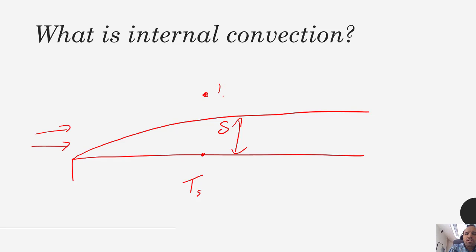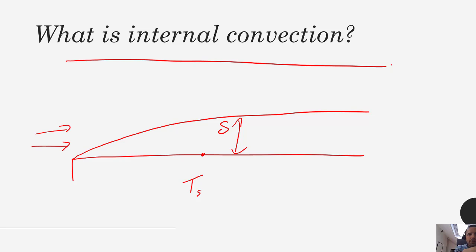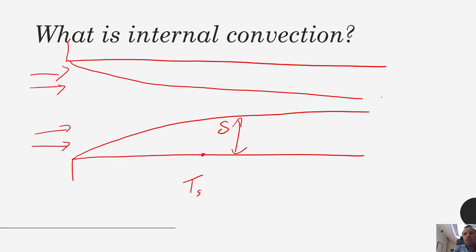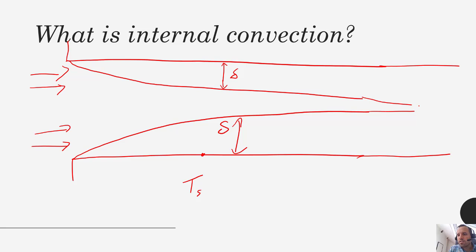Now for the difference between external and internal convection. Imagine you now have two flat plates in parallel. The same boundary layer formation happens on the top surface as well — as viscous forces take hold, a velocity profile forms on top, with boundary layer thickness delta. At some point these two profiles are going to meet, and when they do, you get what's called fully developed flow.